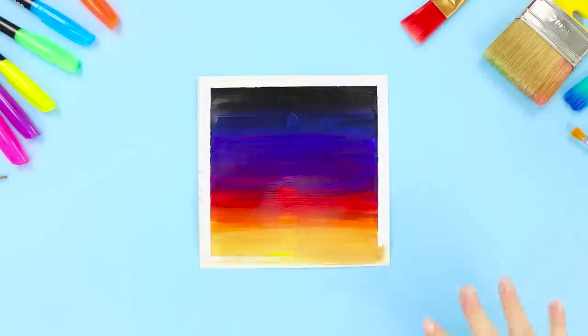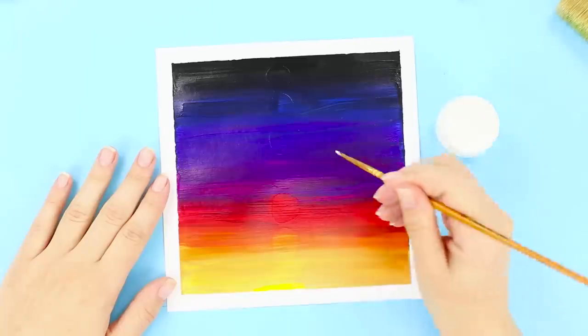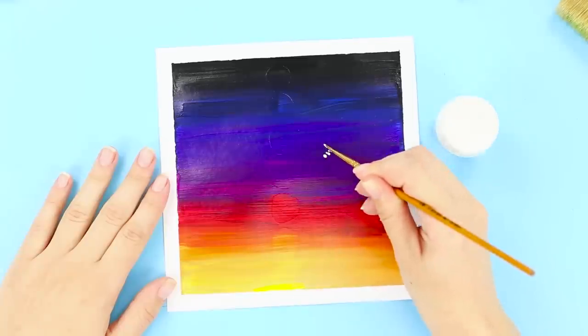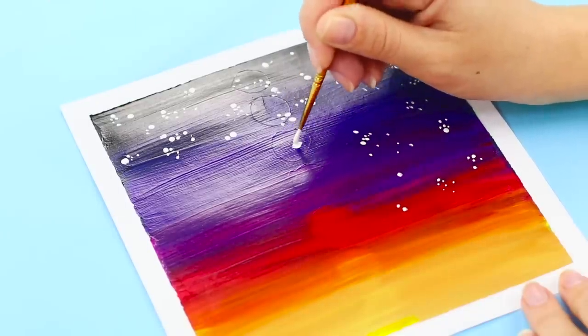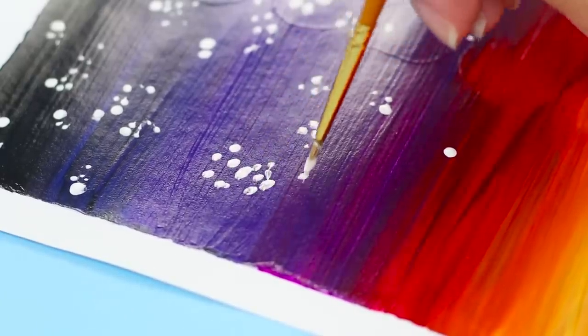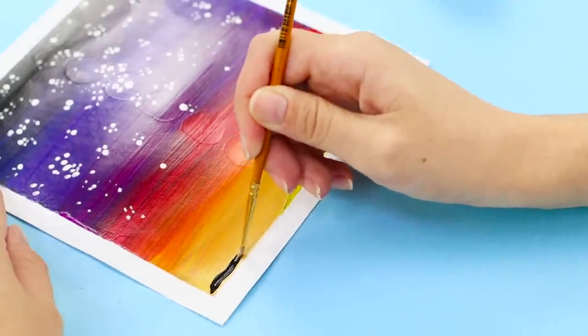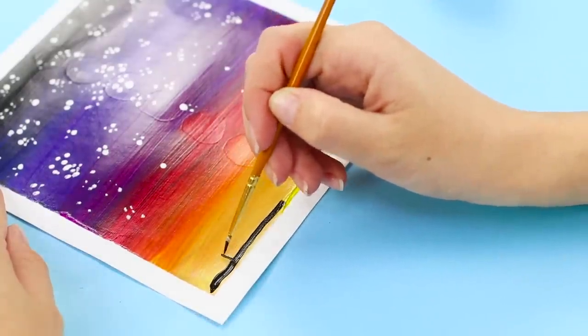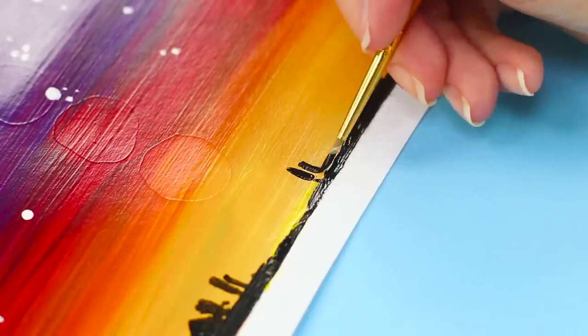Now make a neat frame and get a thin brush. Make stars using white paint on a dark background. And now take black paint and draw the horizon. Add silhouettes of trees and houses.